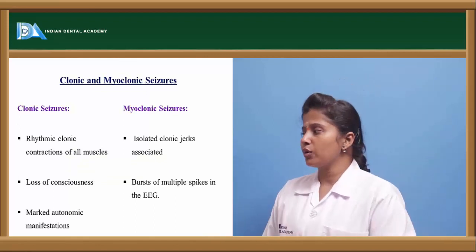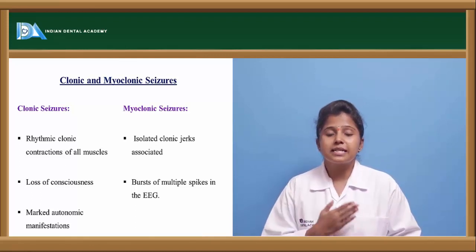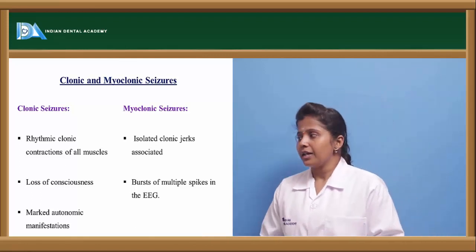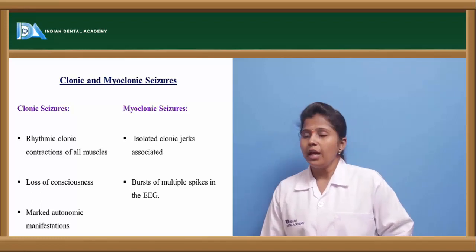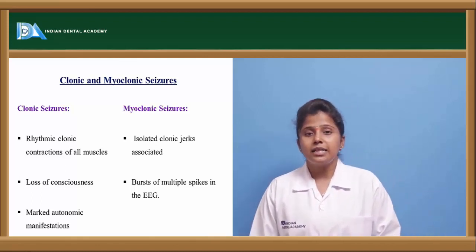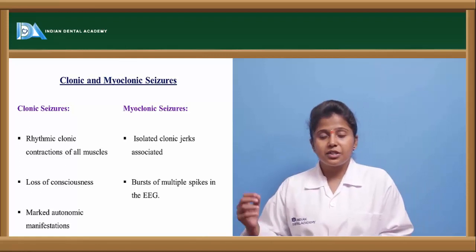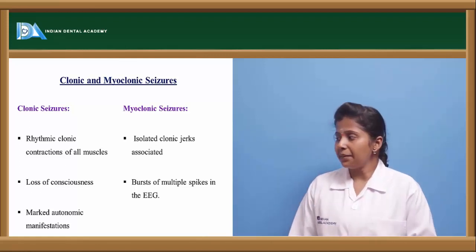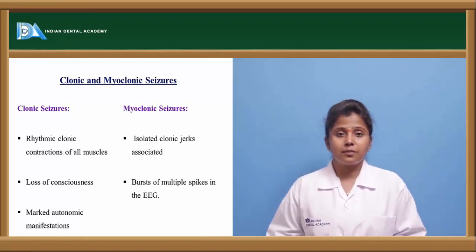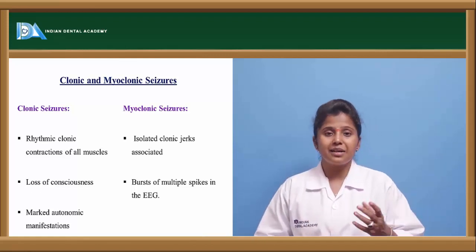Clonic seizures involve rhythmic contractions of muscles, with loss of consciousness and marked autonomic manifestations. In myoclonic seizures, the contractions are not rhythmic — they appear as isolated clonic jerks. If we observe the EEG (electroencephalogram) of a person suffering from myoclonic seizures, we can find burst-like peaks in the EEG.